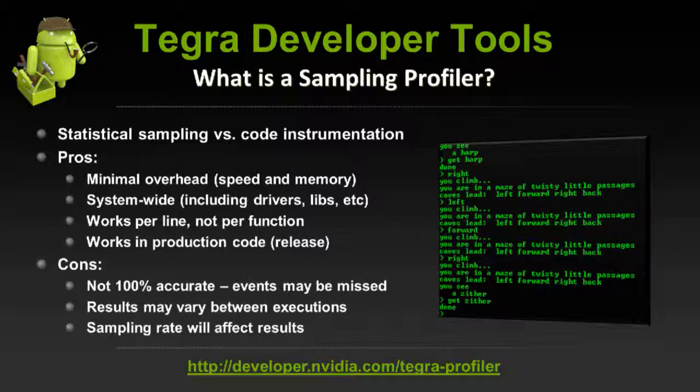Some cons with the sampling profiler: it's not always 100% accurate. Since it's a statistical model sampling at a fixed rate, it may miss specific events, and results may vary between executions — you may get one hit in a function on one run and 100 hits in the same function on another. Sampling rate is also important: more sampling gives better results but increases overhead slightly. This is versus a code instrumentation profiler that modifies your source or binary to measure similar things — it's more accurate, but carries a lot more overhead.